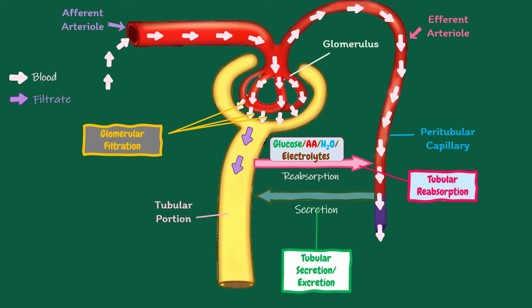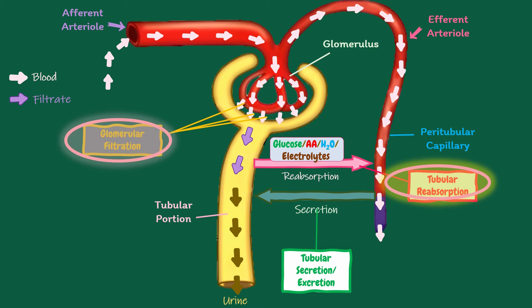Thus, the urine formation includes three processes. First is glomerular filtration. Second is tubular reabsorption. Third is tubular secretion. Among these three processes, filtration is the function of the glomerulus. Reabsorption and secretion are the functions of the tubular portion of the nephron.